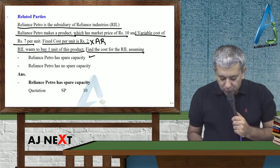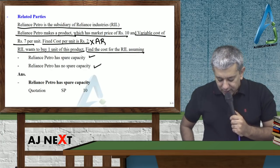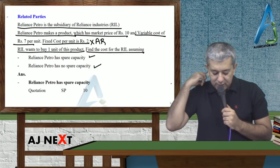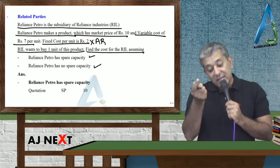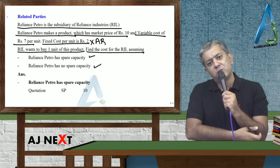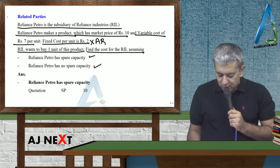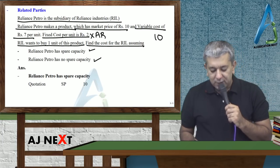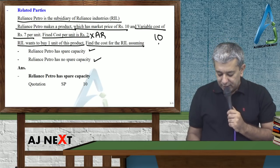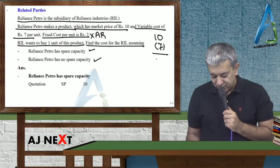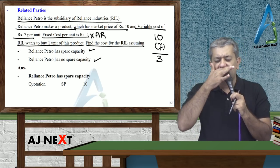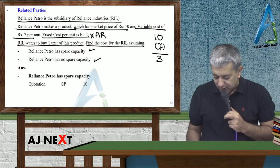RIL wants to buy one unit of this product. Find the cost of RIL, assuming Reliance Petro has spare capacity or Reliance Petro has no spare capacity. Toh dekho. Kis ko product kharidna hai? RIL ko. Kis se kharidne ka hai? Reliance Petro se. Toh, jho Reliance Petro product banata hai, uska selling price kitna hai? Ten. Uska variable cost kitna hai? Seven. Uske upar contribution kitna kamaya chahta hai? Three. Fixed cost per unit toh useless figure hai.